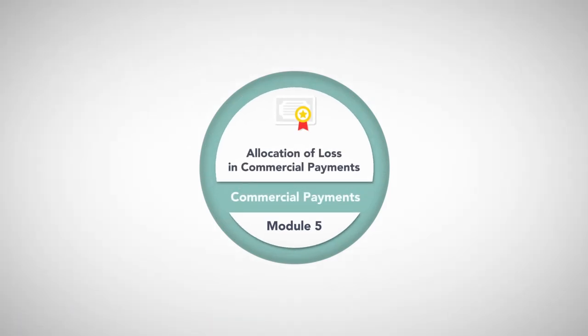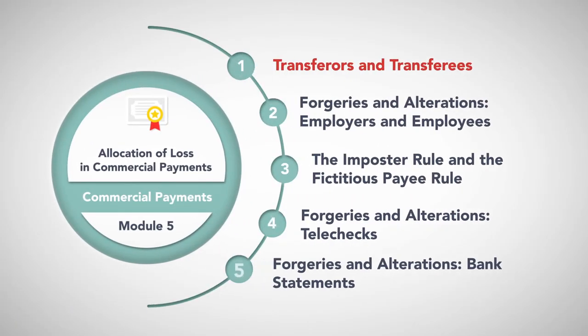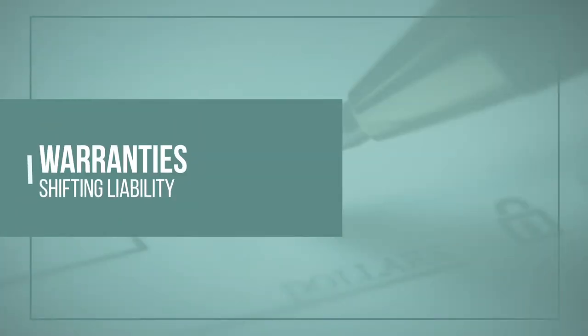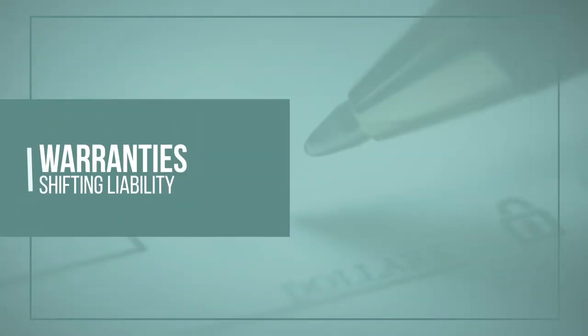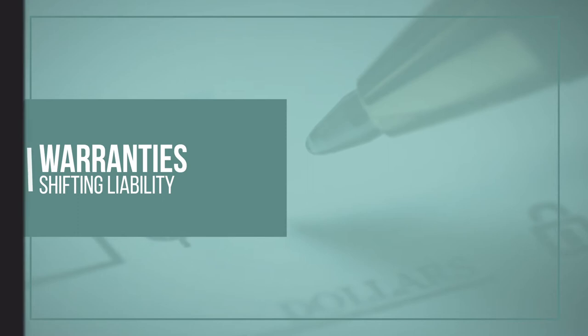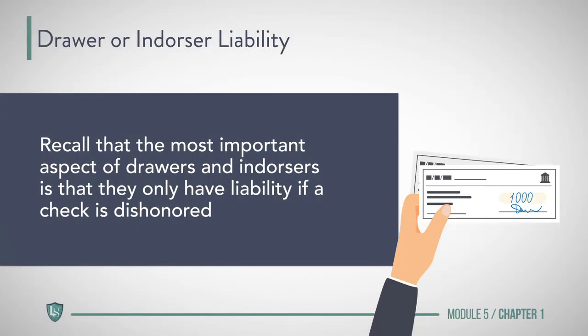Module 5: Allocation of Loss in Commercial Payments — Transfers and Transferees. The role a person plays in any financial transaction determines her legal rights and responsibilities with respect to a transaction. The Code provides specialized rules for several situations beyond those for drawer and endorser liability.